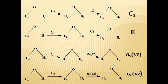Now the second element from the left column is C2, operated by all elements from the horizontal row: E, then C2, then σV(XZ), then σV(YZ). C2 operated followed by E will be C2 only, because E does not bring any change. C2 operated followed by C2: one 180-degree rotation then one more 180-degree rotation brings atoms back to their initial positions, so the result is E — identity operation, as if nothing has been done.